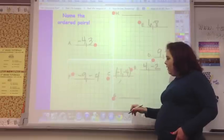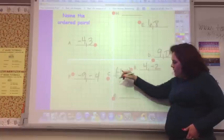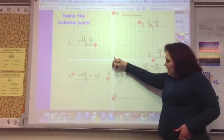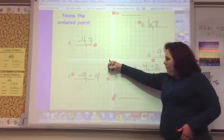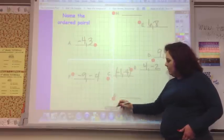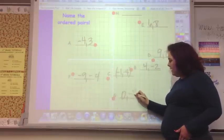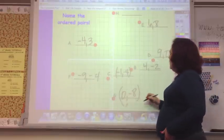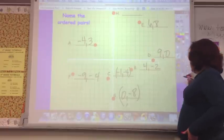All of these can be found. And then G is zero over, because it's on the axis, and then negative 8. So, 0, negative 8. And I know that these were hard to see.